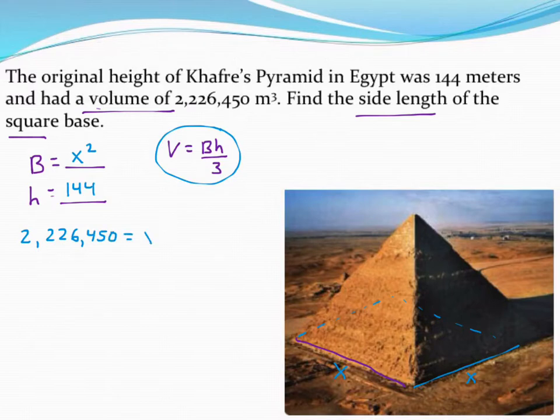Equals, well, base area is x squared, that's unknown to me, times the height, which is 144. And then my formula has me dividing by 3 because I have a pyramid. So there's the equation I need to solve.